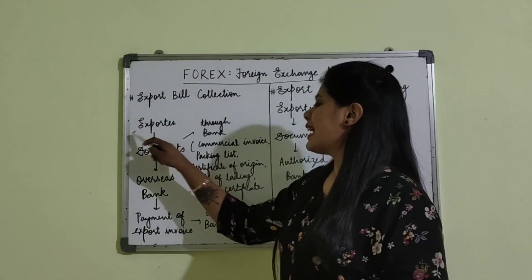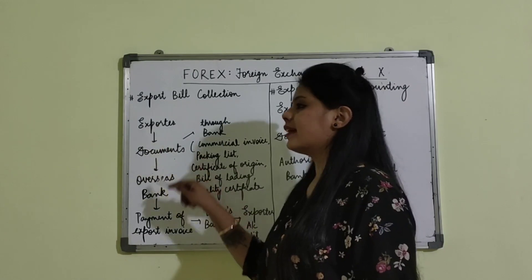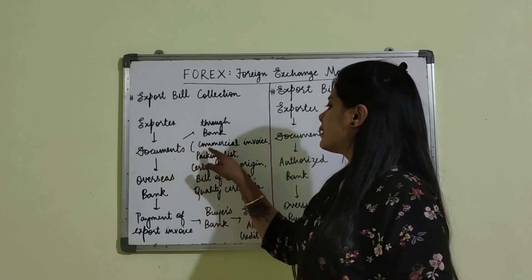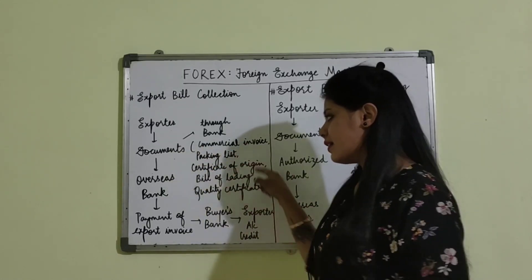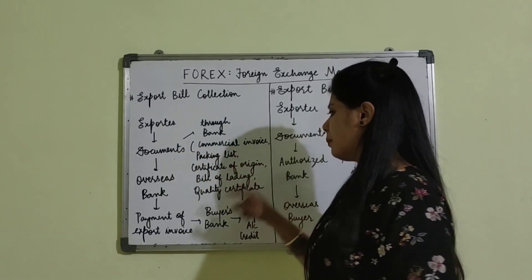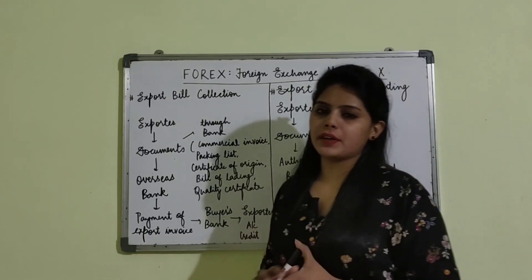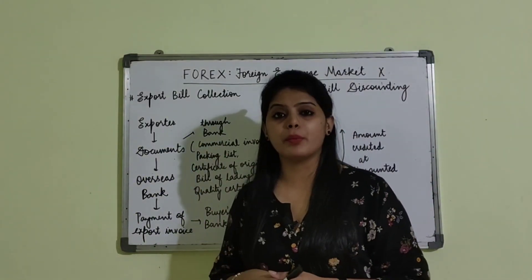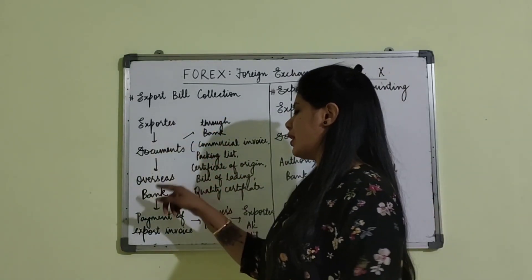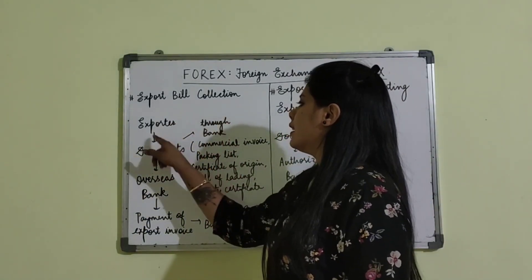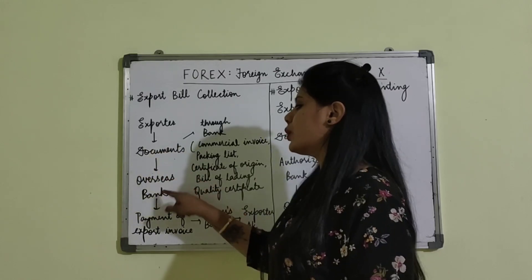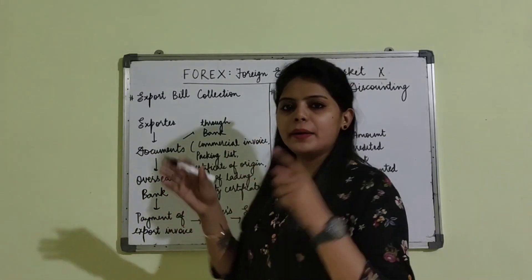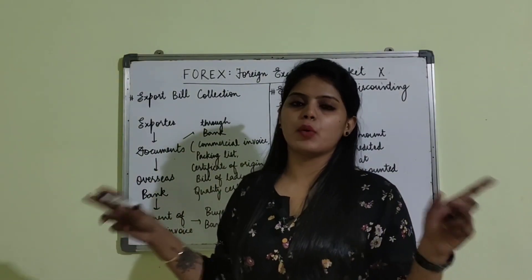So in this case, the exporter will send the export documents. The list of export documents includes: the commercial invoice, packing list, certificate of origin, bill of lading, and quality certificate. These are some of the documents which are sent by the exporter to the importer. After the completion of the export process, the exporter will send the documents to the overseas bank because the banks are the intermediaries of both the exporter and importer.